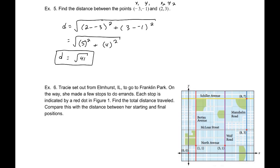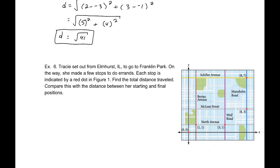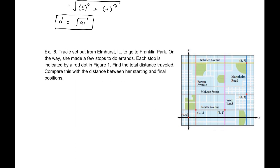Example 6 is going to be slightly different. It says, Tracy set out from Elmhurst, Illinois to go to Franklin Park. Starting here. We're going to Franklin Park, which is over here at (8, 7). Each stop is indicated by a red dot in this figure. Find the total distance traveled. And then compare this distance between her starting and her final positions.